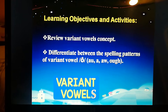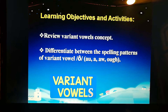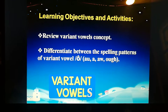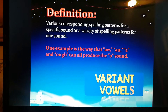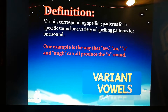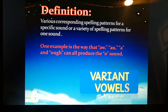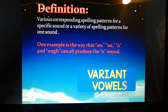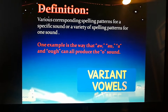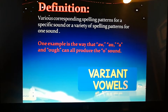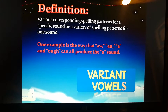We have to review the Variant Vowels concept and differentiate between the spelling patterns of Variant Vowels: AU, A, AW, and OUGH. When we say Variant Vowels, it means various corresponding spelling patterns for a specific sound, or a variety of spelling patterns for one sound. One example is the way that AW, AU, A, and OUGH can all produce the AW sound.